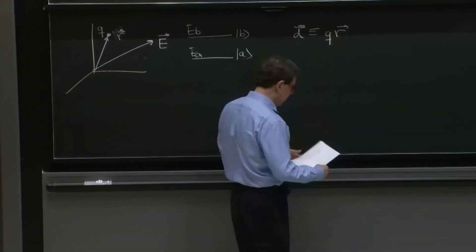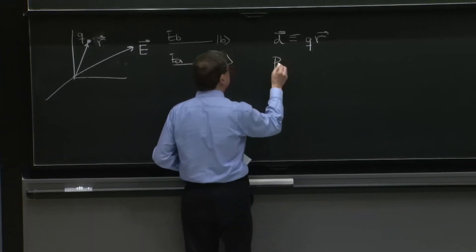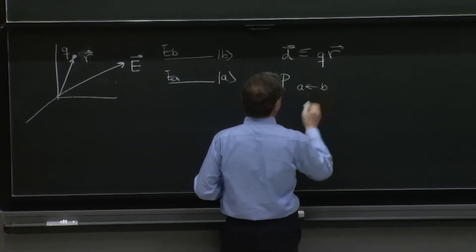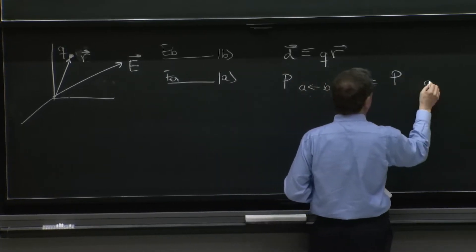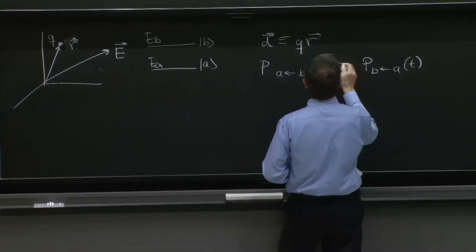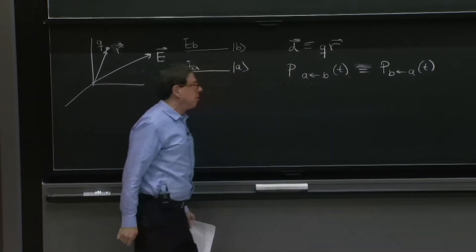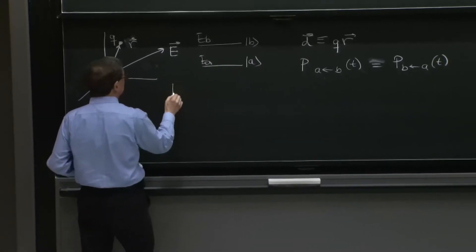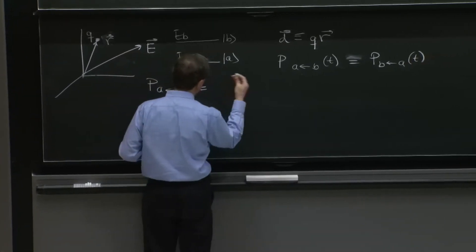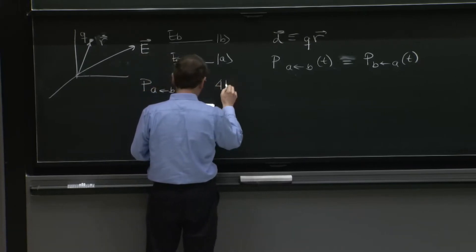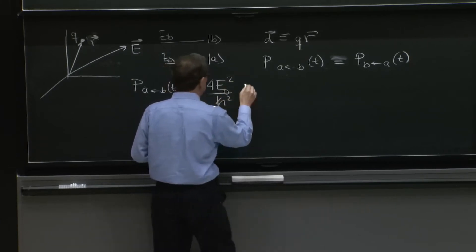So we observed, and we've observed several times, that the processes B going to A of stimulated emission and the process of A going to B of absorption are the same, not equivalent, the same, to first order in perturbation theory. And we wrote last time the formula for it using our general formula for harmonic transitions. Not Fermi's golden rule, because this was a discrete transition, apparently, between these two levels.